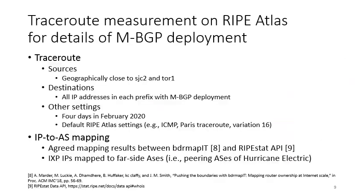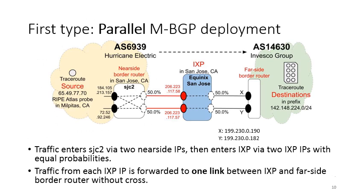We then deployed traceroute measurement on RIPE Atlas to obtain more details of MBGP deployment. The chosen sources are geographically close to border routers of San Jose 2 and Trento 1. For destinations, we use IP addresses belonging to each prefix with identified MBGP deployment. The traceroute lasted 4 days in February 2020, and all other settings are defaulted by RIPE Atlas. After obtaining traceroute data, we perform IP-to-AS mapping using agreed mapping results between border mapping and RIPEstat API. For IP addresses belonging to IXP, we map them to far-side ASs, which are the peering ASs of Hurricane Electric.